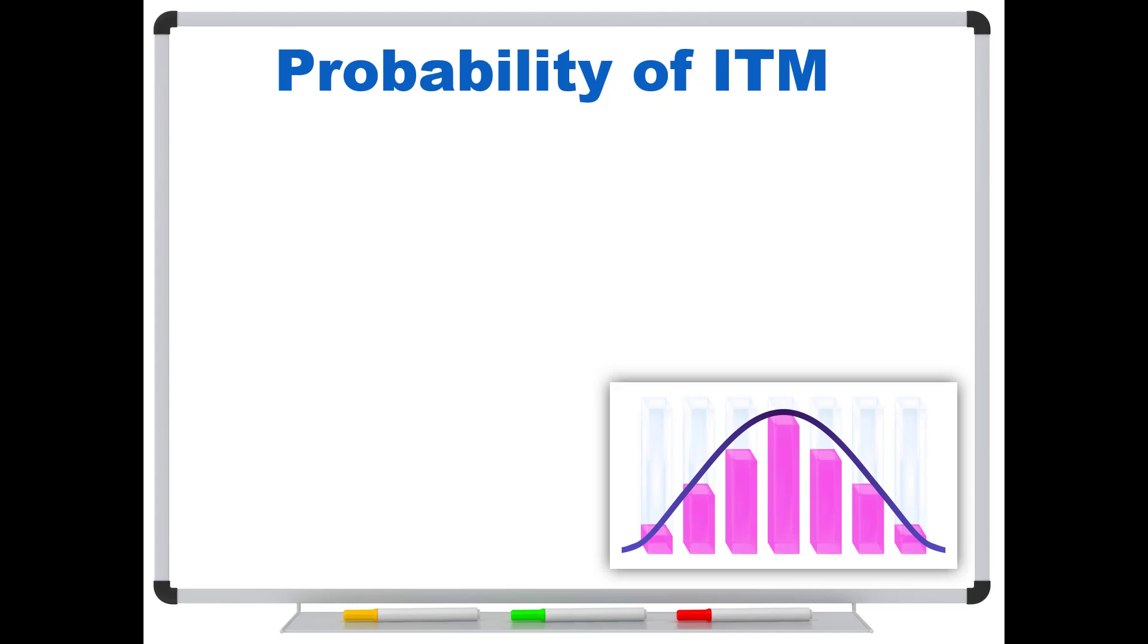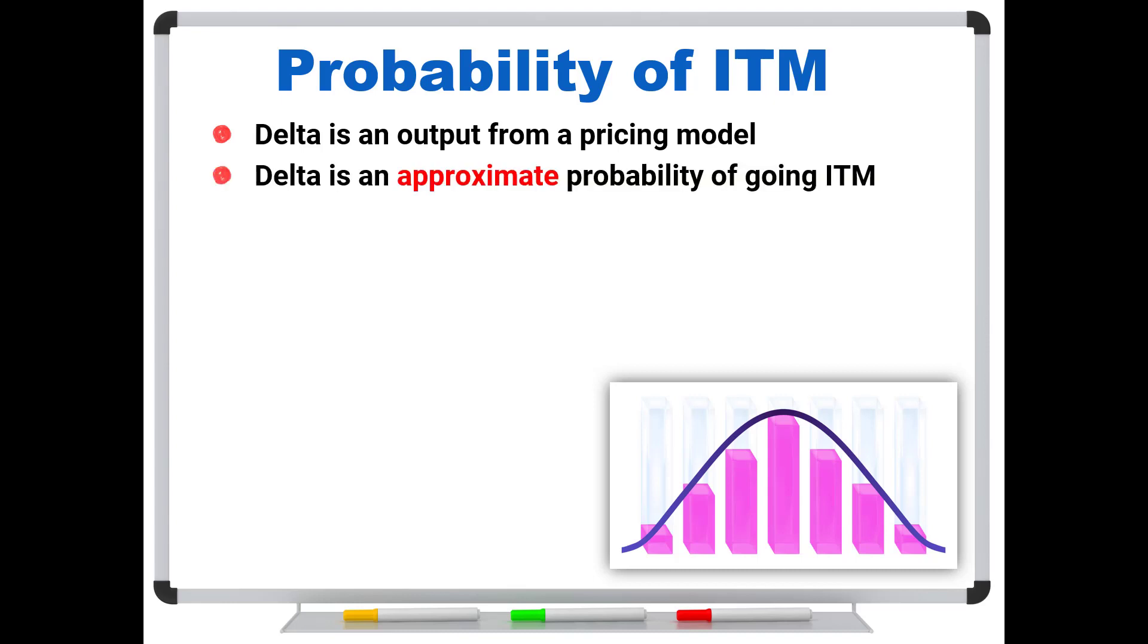So the probability of being in the money. Remember that Delta is an output from a pricing model, let's say from the Black-Scholes model. And again, Delta is an approximate probability of an option going in the money. But that does not mean it's a good approximation or that it is the probability. And unfortunately, traders relying on Delta as the probability can get very different results.